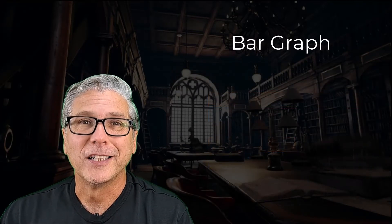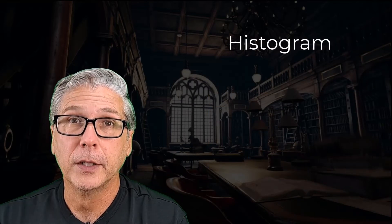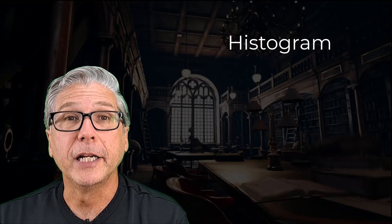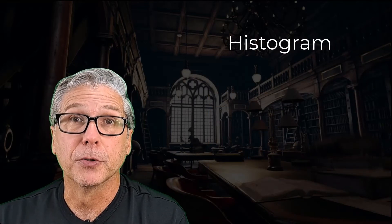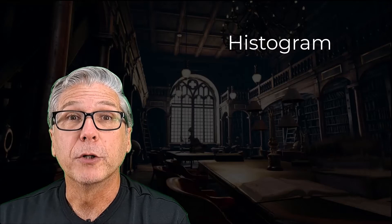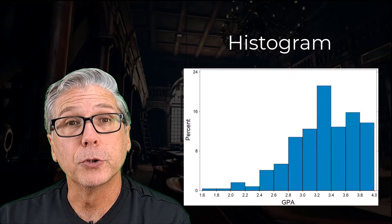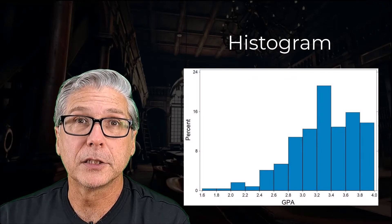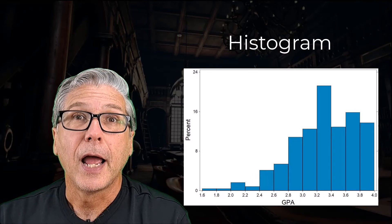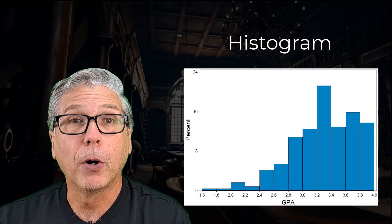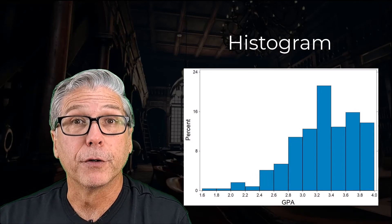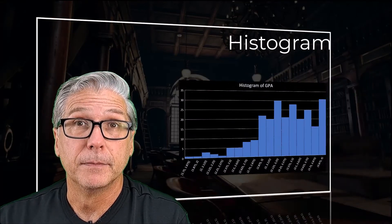For quantitative data we still use bar graphs, although some people call them histograms. Due to the nature of the numerical data, we group similar observations together into groups or classes and then we draw bars for the different groups of data.